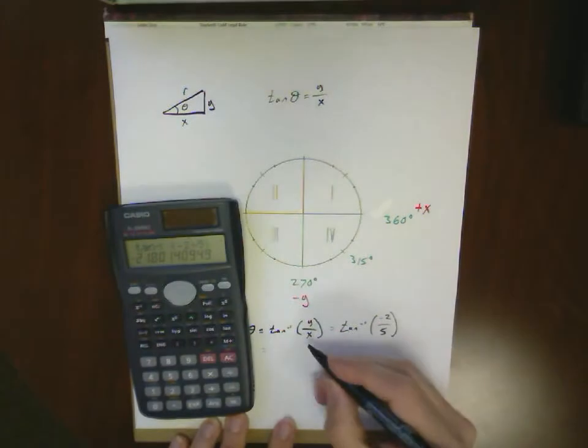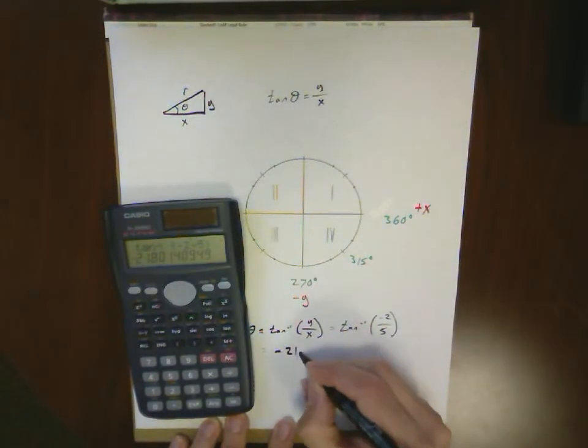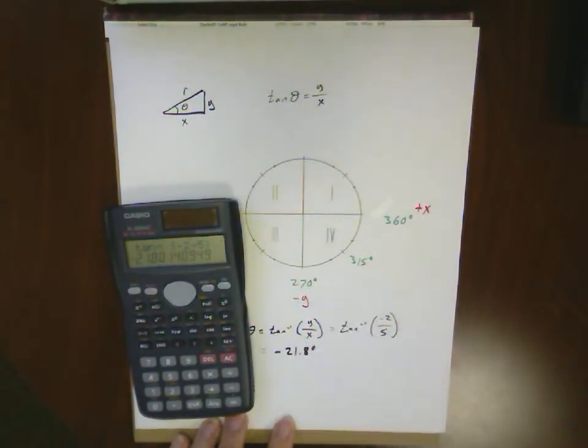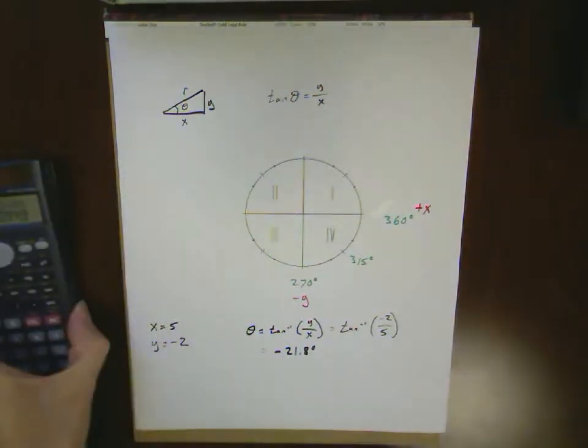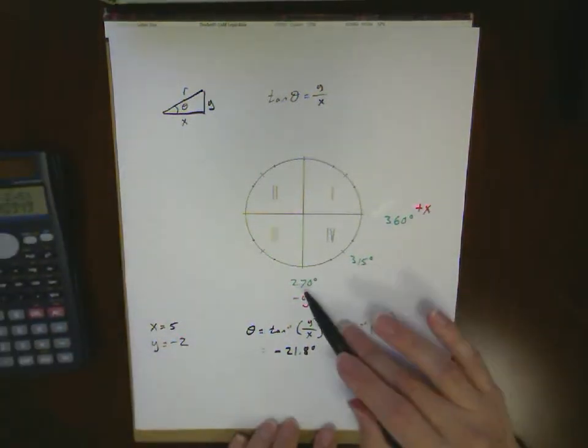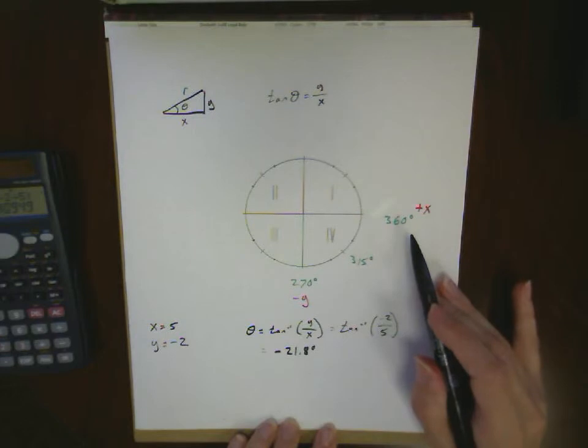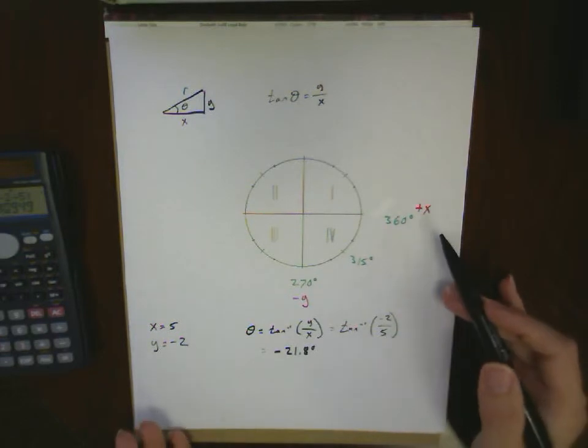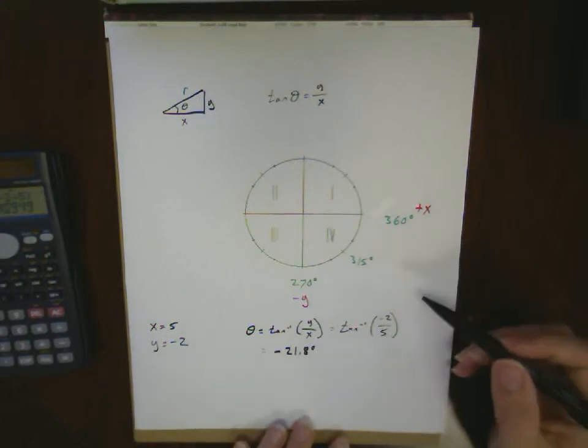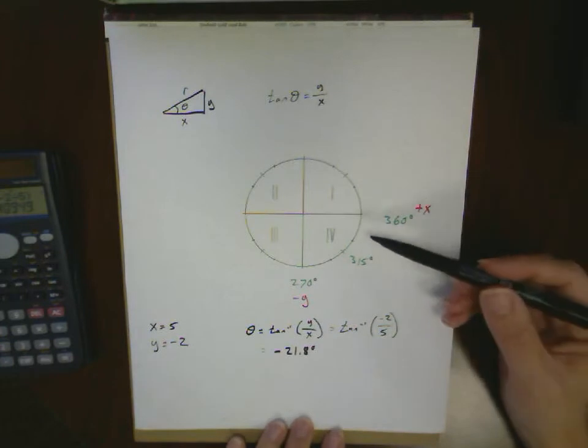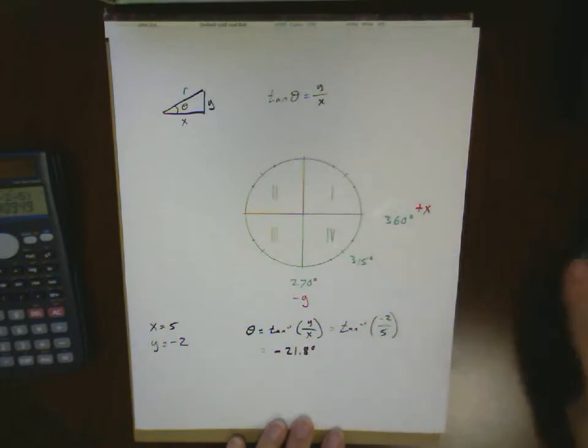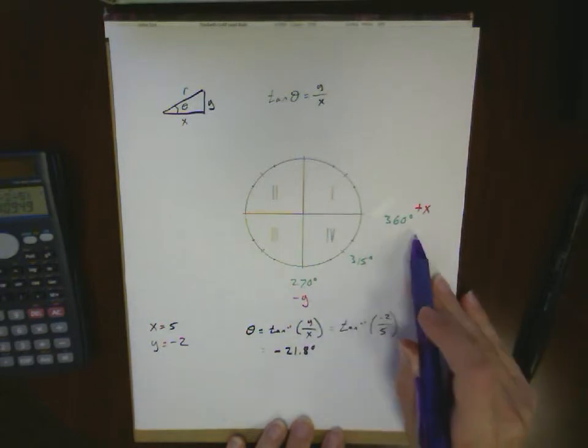I'm going to get a value of minus 21.8 degrees. Now, negative 21.8 degrees is not between 270 and 360. So how are they defining this angle? When we think about it, they look at that angle, and it's actually using an alternate notation, where instead of defining everything between 270 and 360,